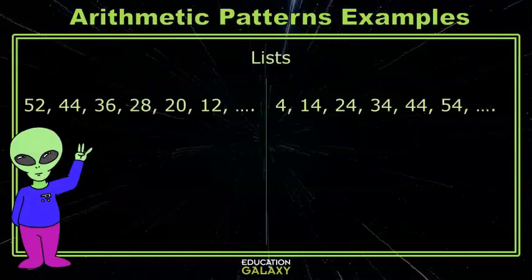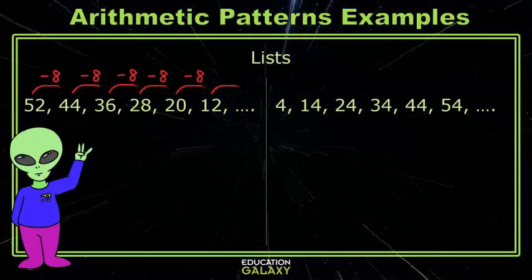In this list, 52, 44, 36, 28, 20, 12, each term is decreasing by 8. That means the rule is to subtract 8. If we continue this pattern, the next number would be 12 minus 8, which is 4.